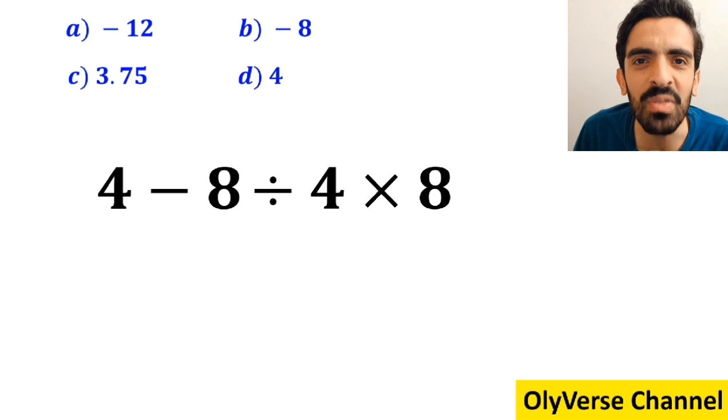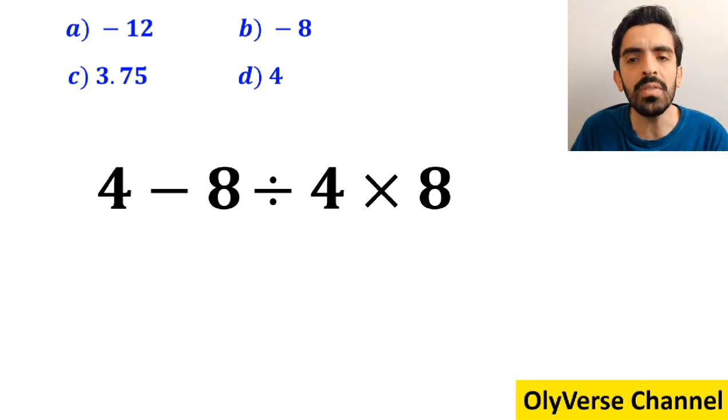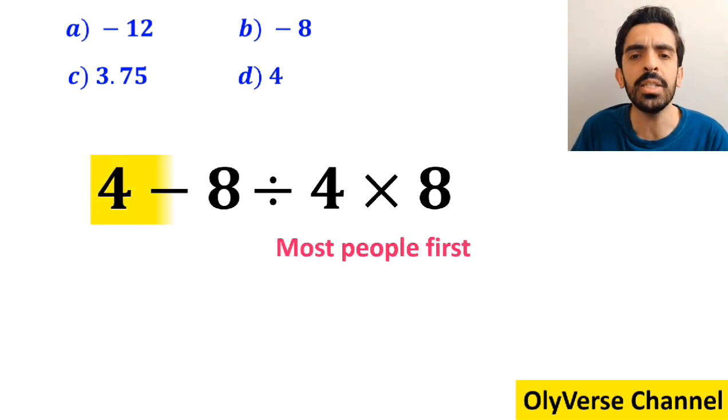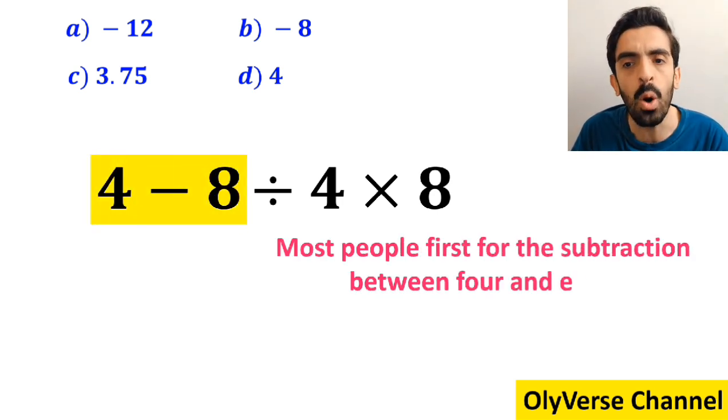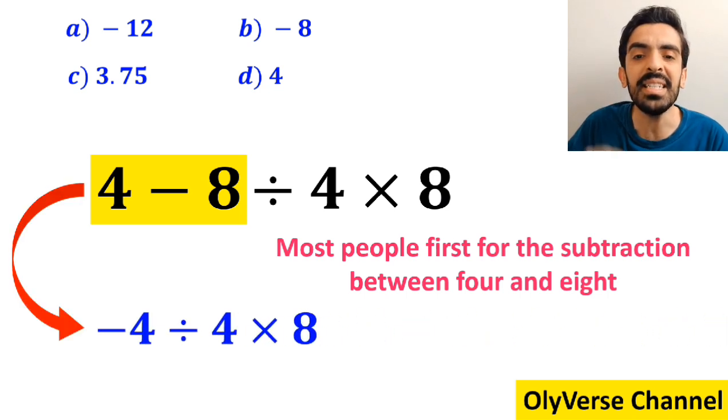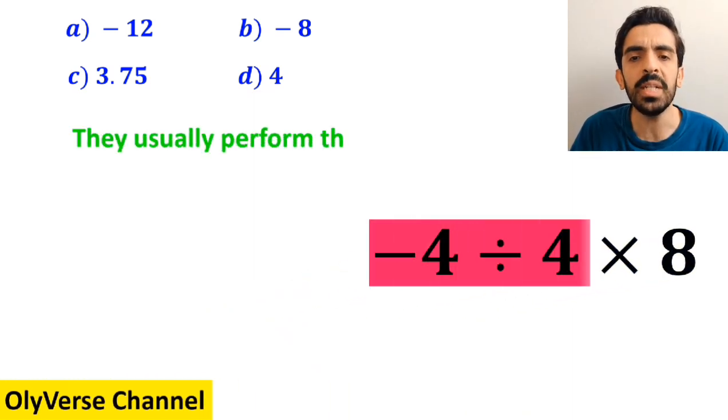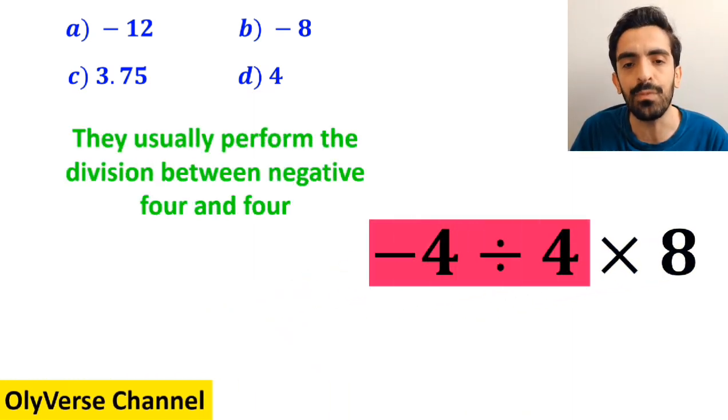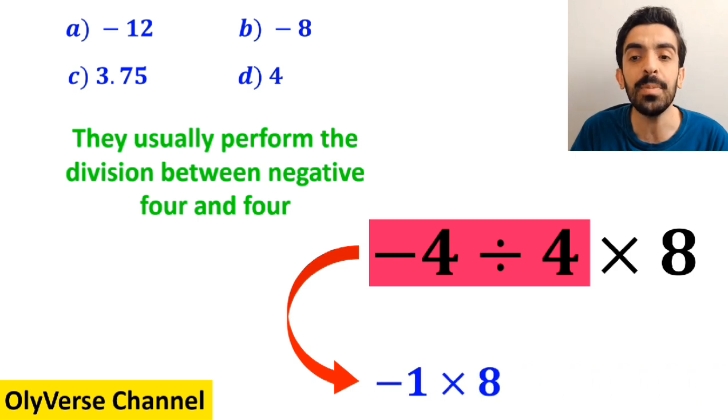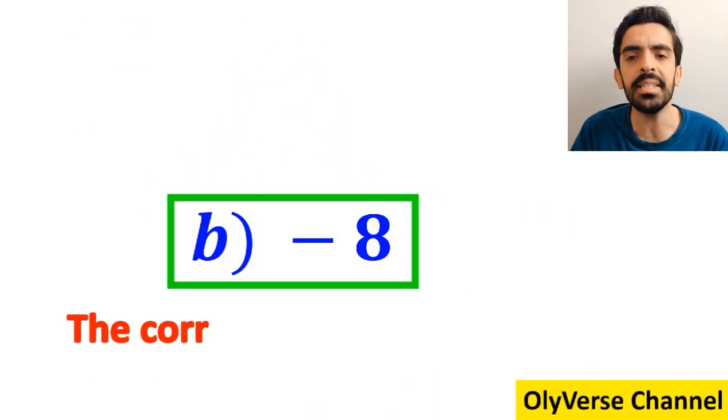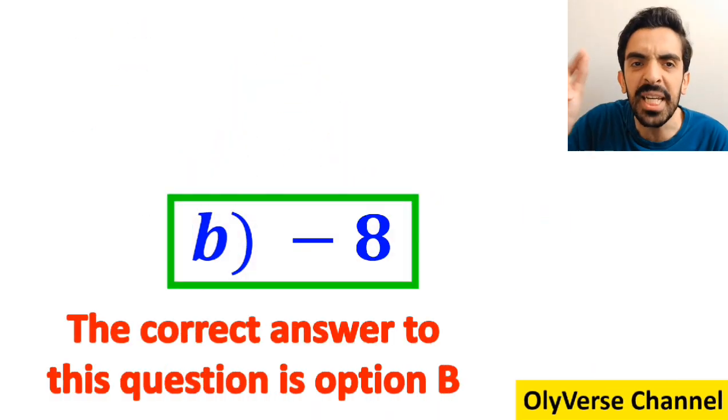Let's break it down and solve it together. To solve this question, most people first go for the subtraction between 4 and 8 and they rewrite it as negative 4 divided by 4 then times 8. In the next step, they usually perform the division between negative 4 and 4, simplifying this expression to negative 1 times 8, which finally gives them the answer negative 8. And immediately, they say that the correct answer to this question is option B.